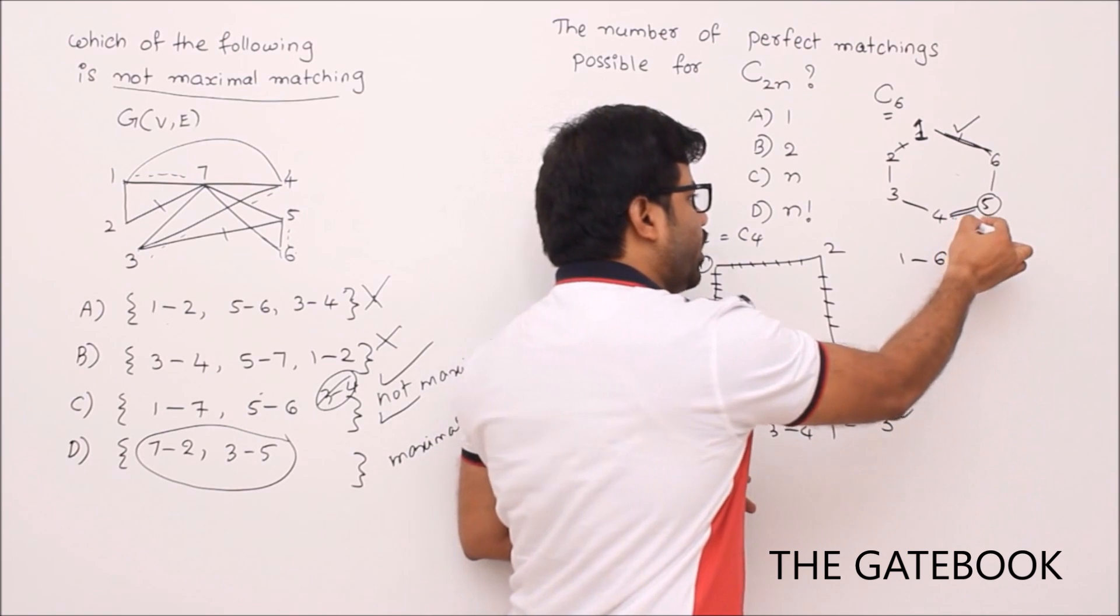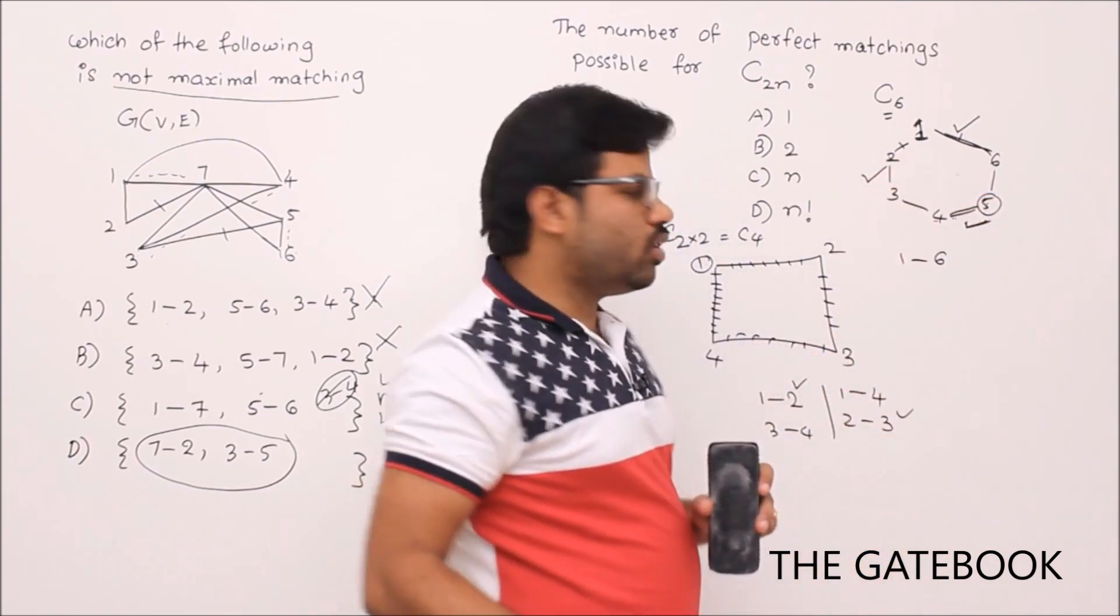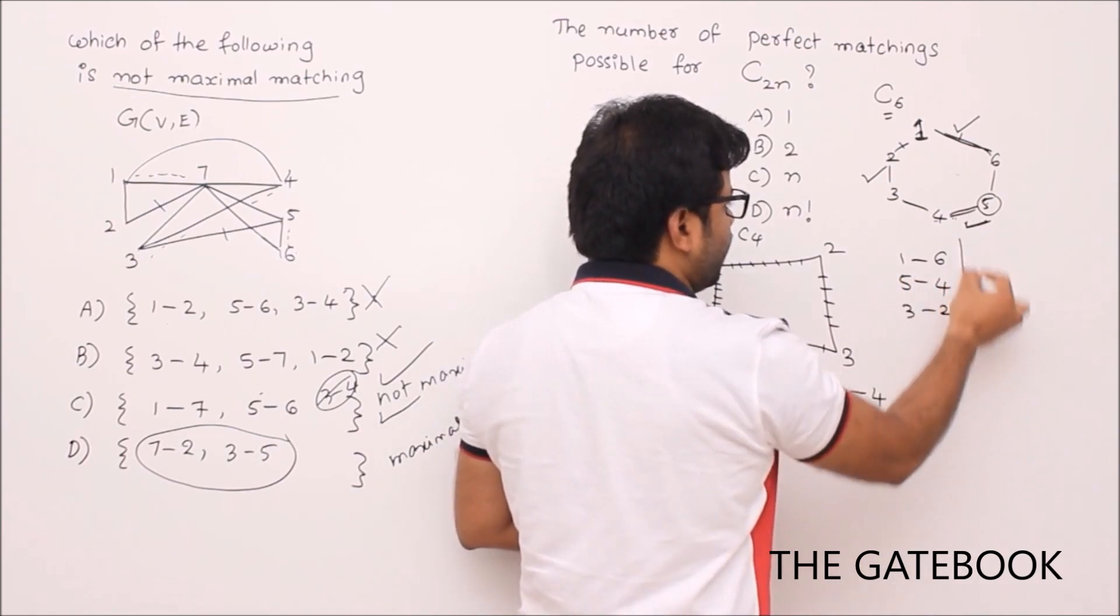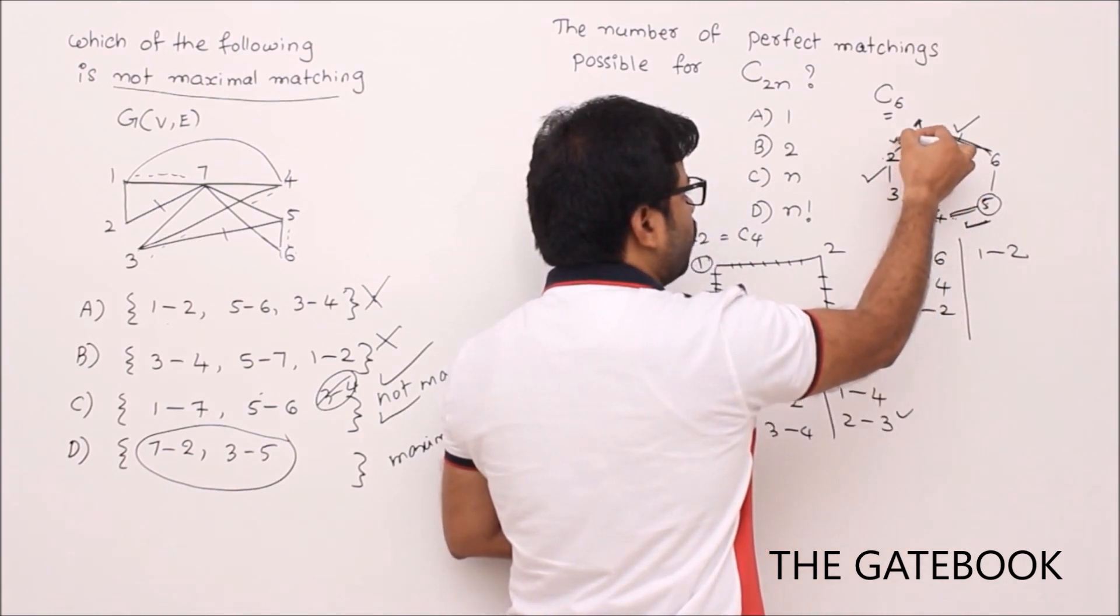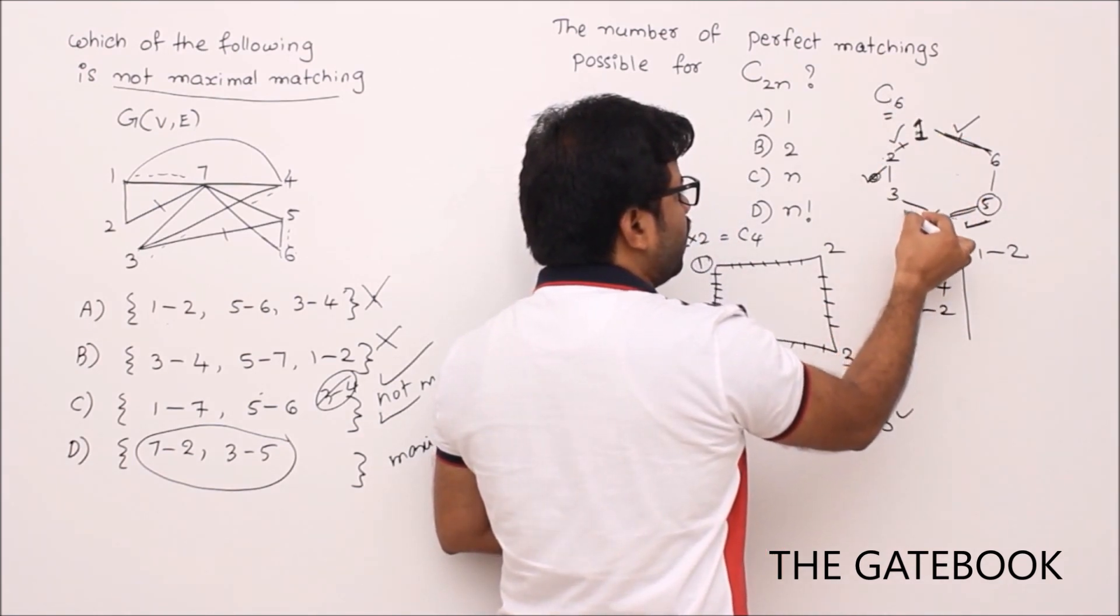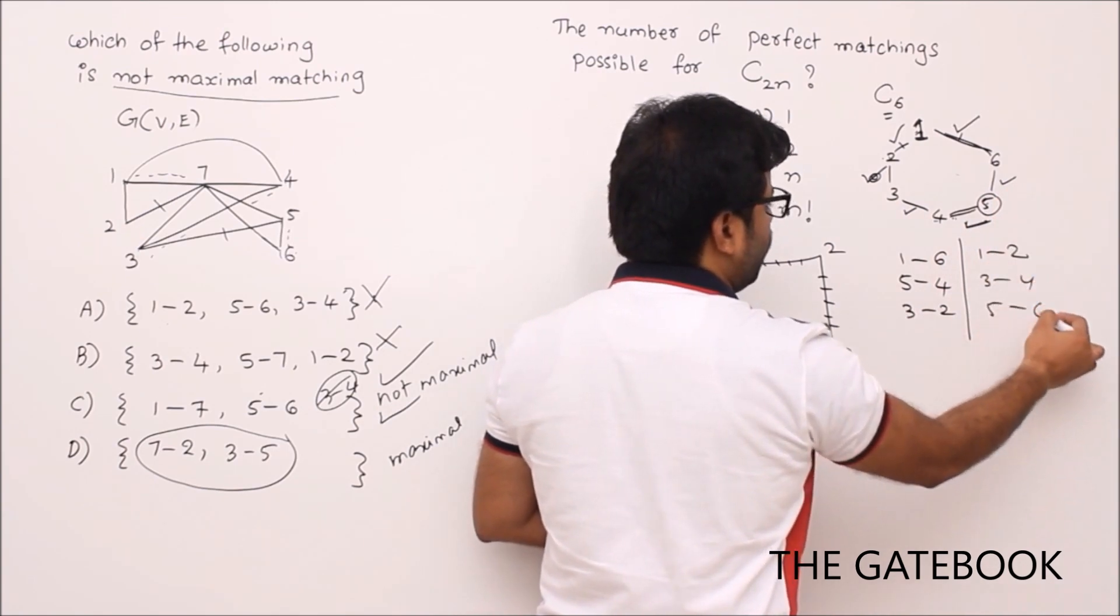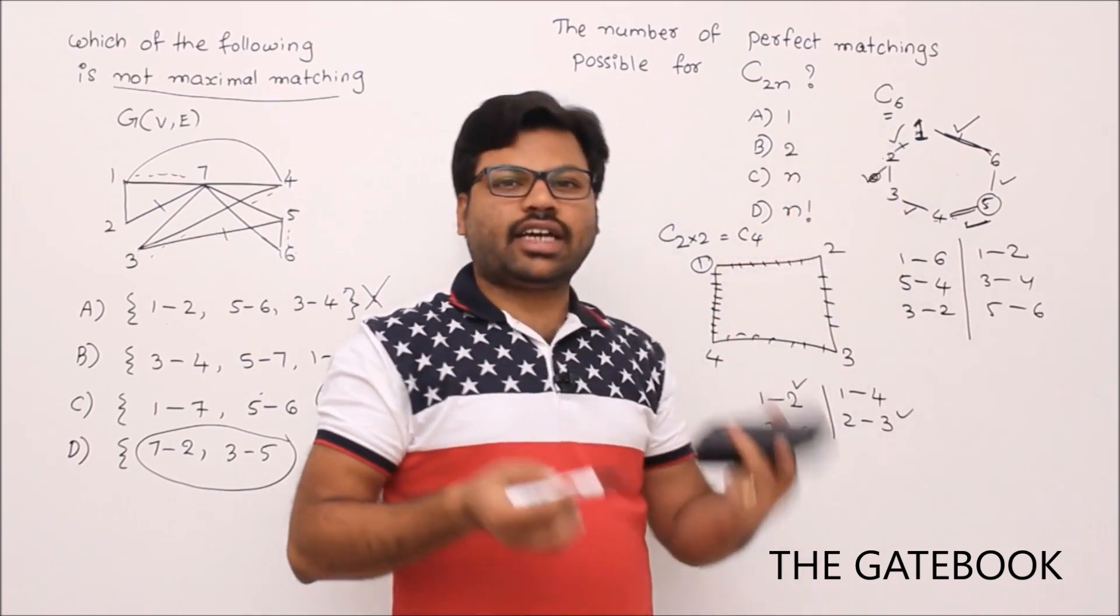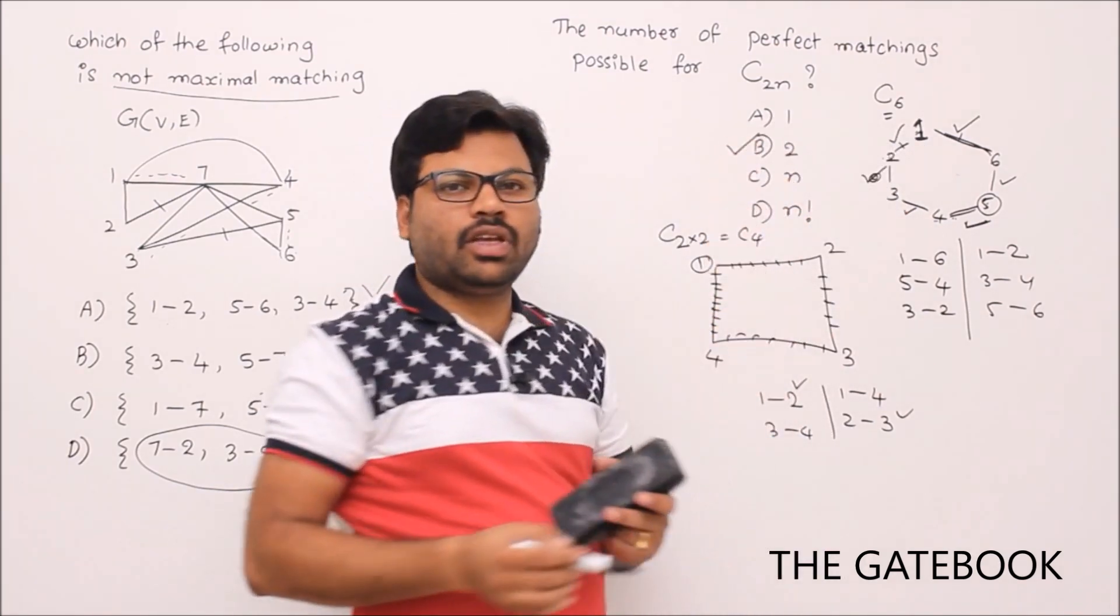5 has to take 4. If 5 takes 4, definitely 3 has to take 2. Everything is fixed: 1-6, 5-4, 3-2. The second alternative: if 1 takes 2, again everything is fixed. If 1 takes 2, then 3 takes 4, then 5 takes 6. There are again two perfect matchings. I can say one is anti-clockwise, second is clockwise selection. Finally, answer is B. In that way you can solve questions related to maximal matching, matching, and any matching problem.